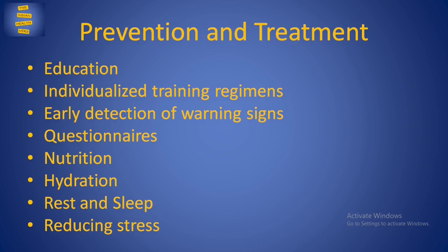Reducing other stressors like work pressure, interpersonal conflicts, and illnesses is also important. Psychological stressors in the background of excessive exercise are important triggers for the development of overtraining syndrome. In times of increased life stressors like infections, training regimens should be temporarily reduced or halted altogether. This is known as periodization and is a proven intervention for reducing the occurrence of overtraining syndrome.